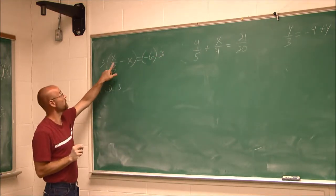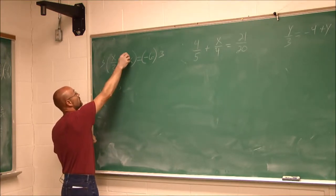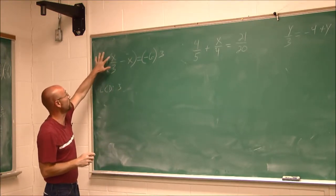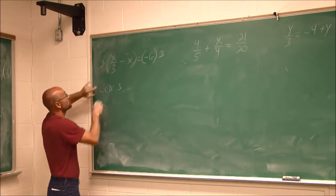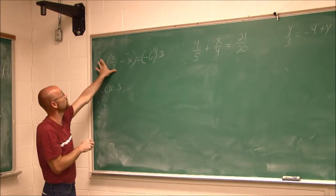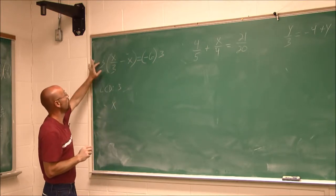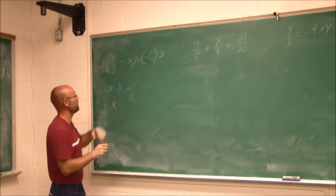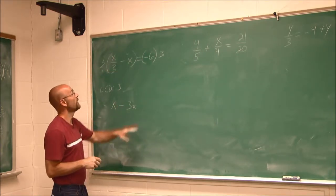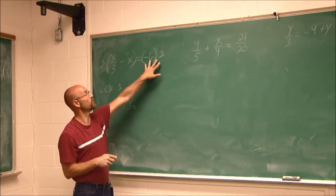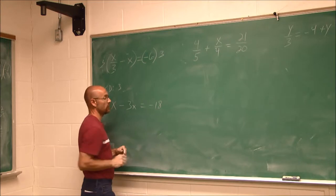Here we have to be careful. There's some distribution we have to do. We have to distribute this to both values. 3 times x over 3. The 3's will reduce, right? We think of this as 3 over 1. That's going to reduce to 1. All it leaves us with is an x. When I multiply 3 times negative x, that gives me a negative 3x. And then on this side, if we multiply 3 times negative 6, we get negative 18.